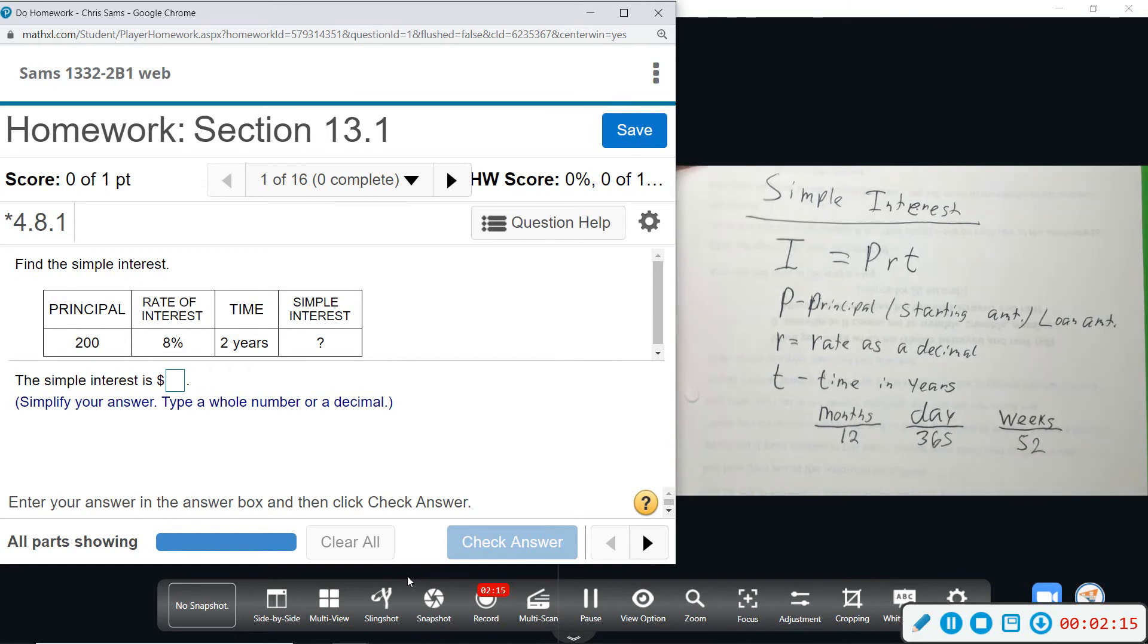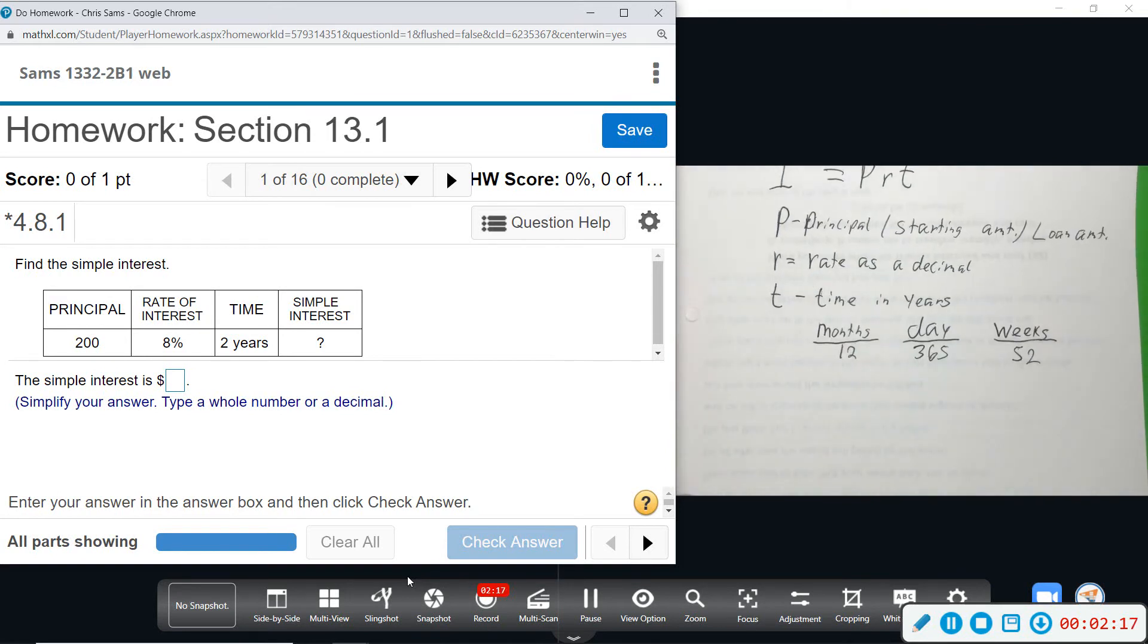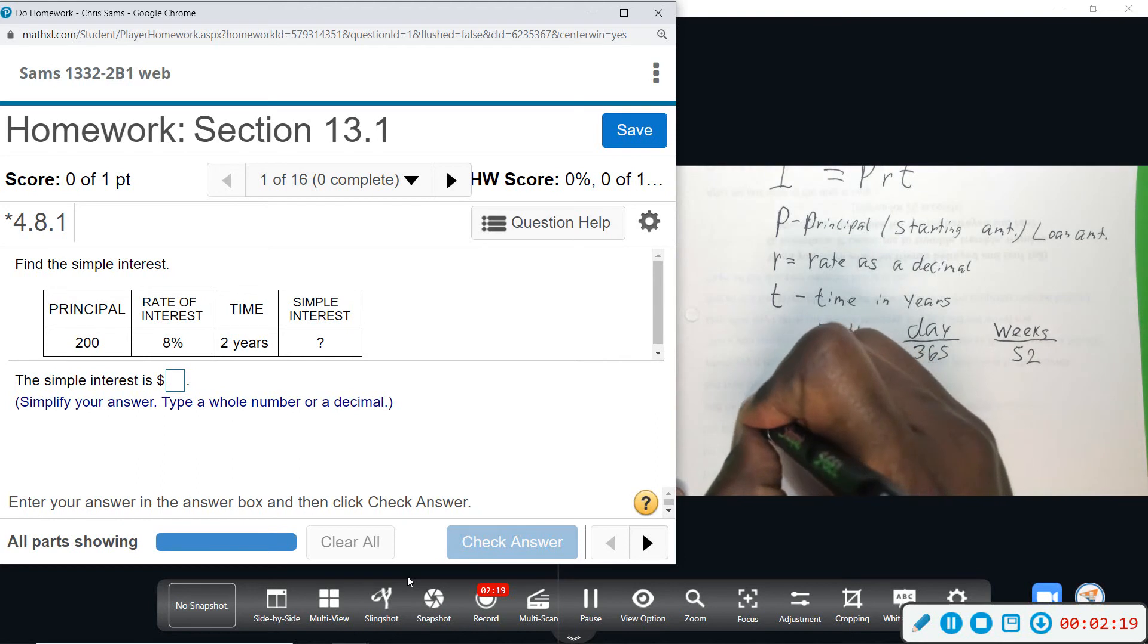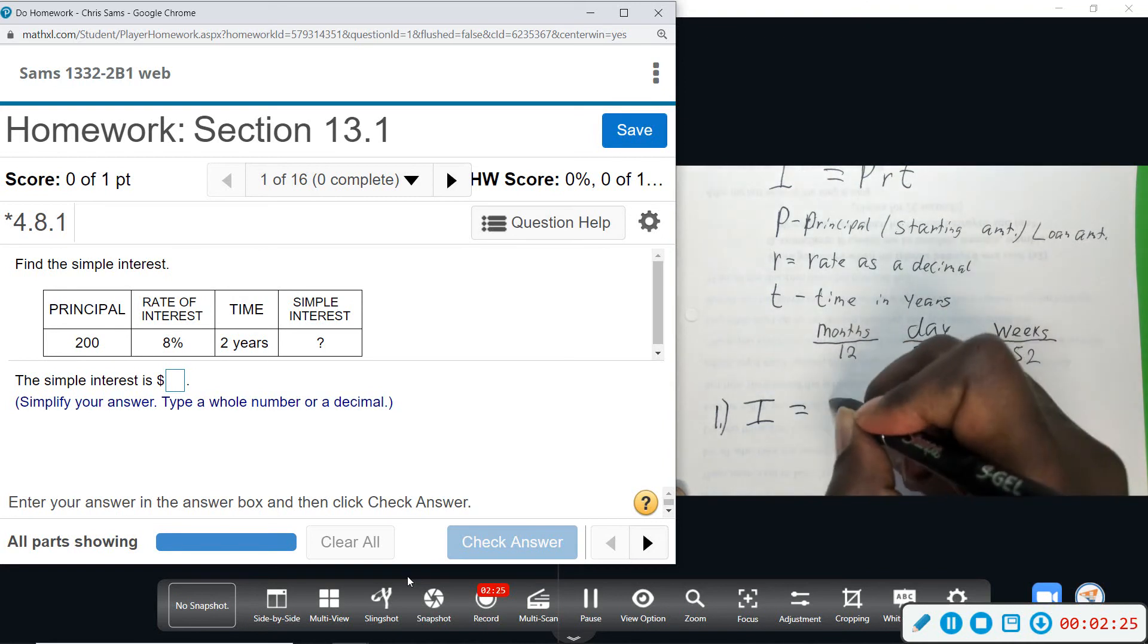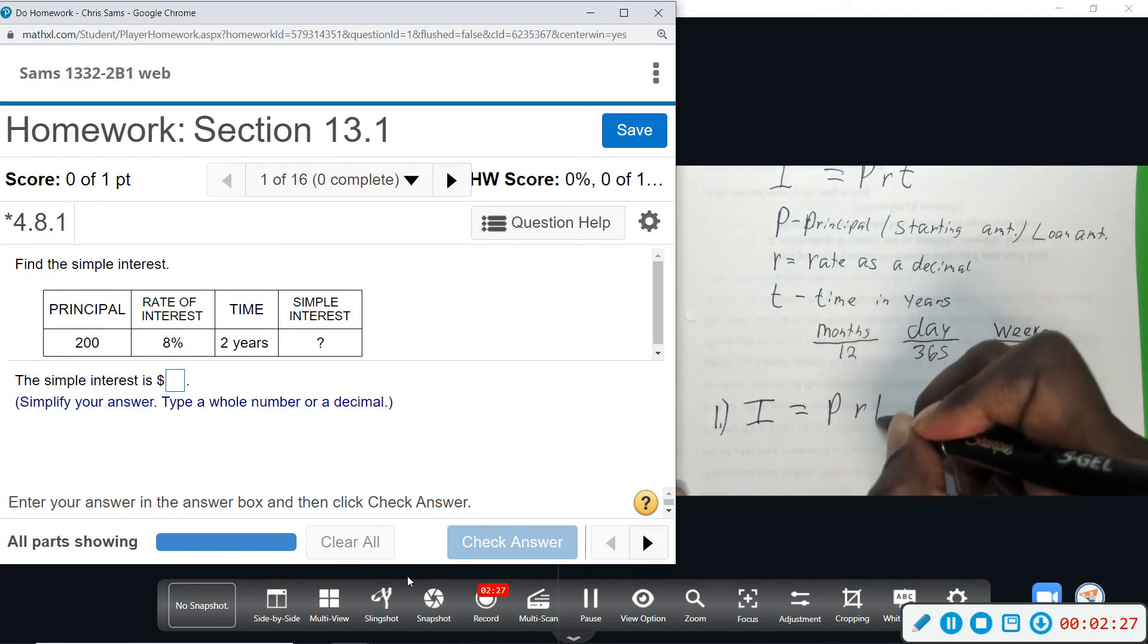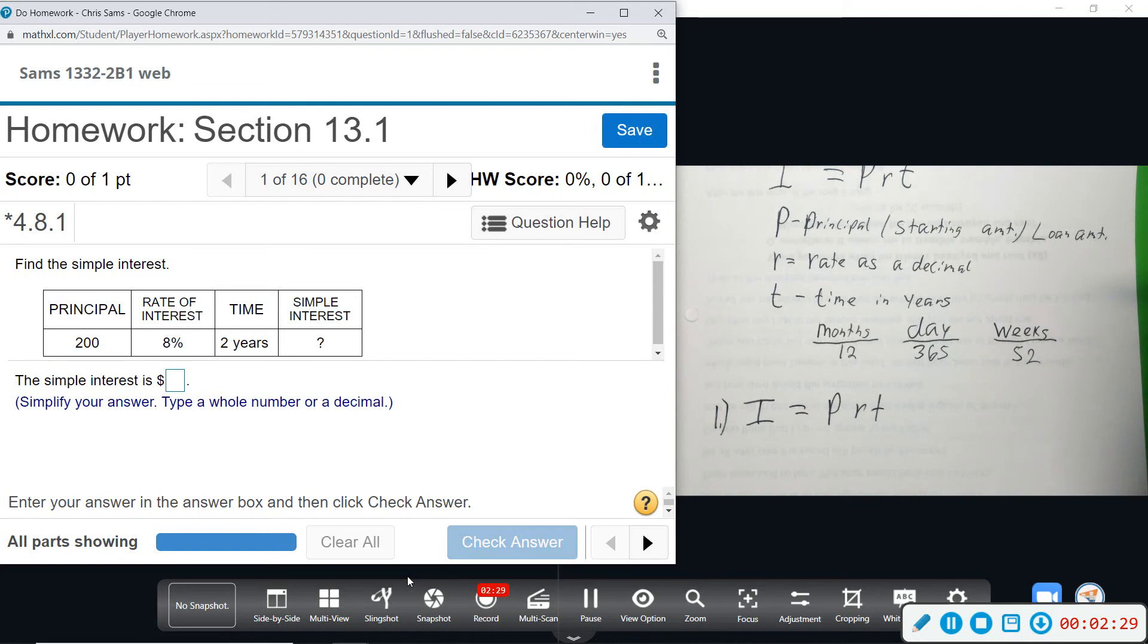All right, now based on that, this first one wants to know simple interest. So it wants to know I. Number one, so it wants to know I, which is equal to P R T, and this table gives us everything we need. So P is 200, the rate is 8%, so as a decimal that is 0.08.